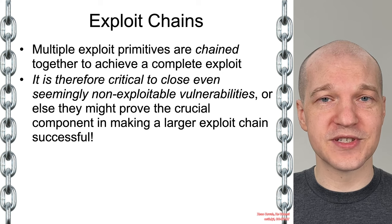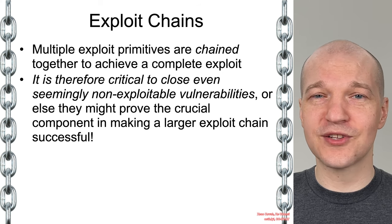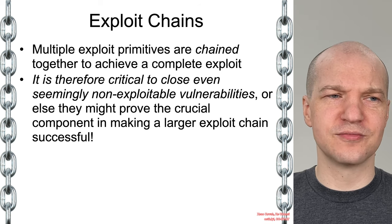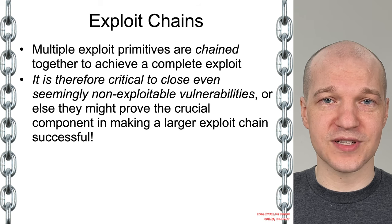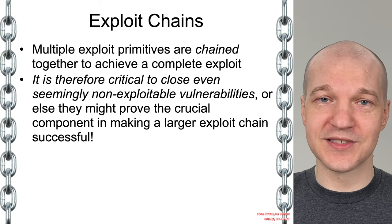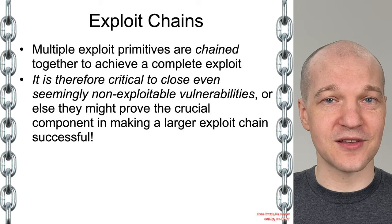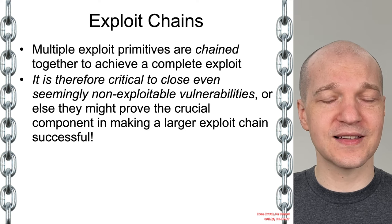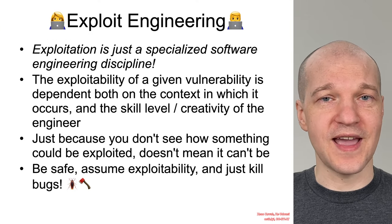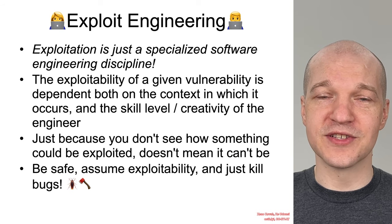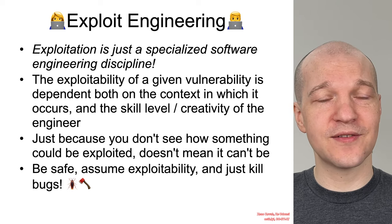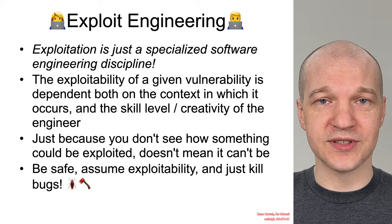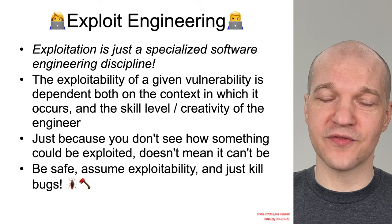The reason we mentioned exploit chains is to say that any given little vulnerability might not seem important at the time. It might seem like you can't see how that could matter, or that it can't in and of itself allow for exploitability. But leaving around those little bugs just gives an attacker an opportunity to chain them together with other bugs in order to ultimately achieve their goals. That's why it's very important to close down even the innocuous-seeming bugs.